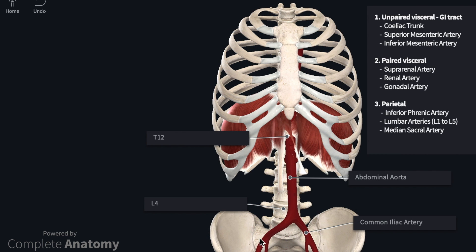There are many branches which may seem overwhelming at first, but they can be broadly divided into three groups. These are the unpaired visceral branches, which supply the GI tract, associated digestive organs, and also the spleen. The second group are the paired visceral branches, which supply the remaining viscera associated with the abdomen. Finally, we have parietal branches that supply non-visceral components, for example the diaphragm or the abdominal wall.